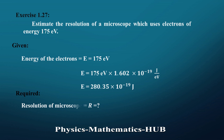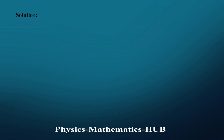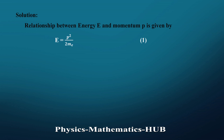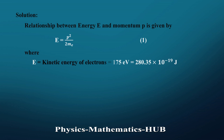We have to find the resolution of the microscope, which is R. Since we are working with electrons, we know that the relationship between kinetic energy and momentum is given by E = p² / (2mₑ). Let this be equation 1. Here E is the kinetic energy of the electron, which is given.